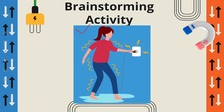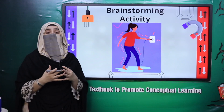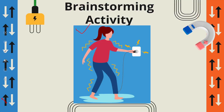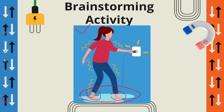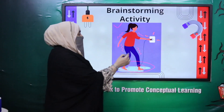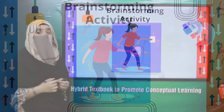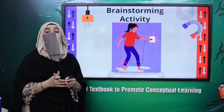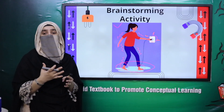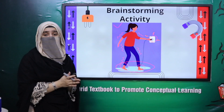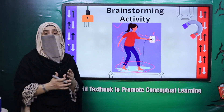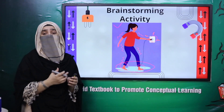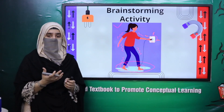Let's do an activity. Here is a picture — what is being shown in this picture? There is a lady who is barefoot, standing on a wet floor, and inserting a plug into a socket — and because of this, she is getting an electric shock. So if we wear shoes or dry our hands completely and stand on a dry floor before using a socket, we can avoid electric shock. There are additional precautionary measures we can adopt to avoid electric shock.